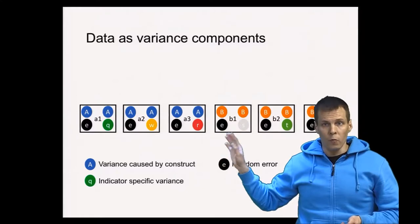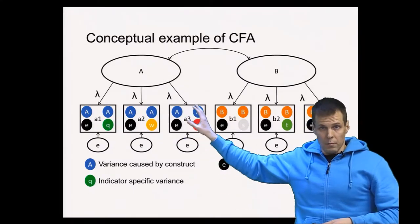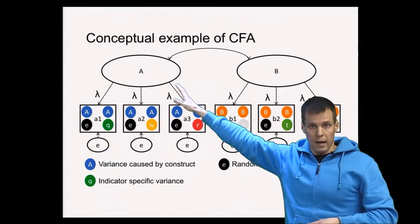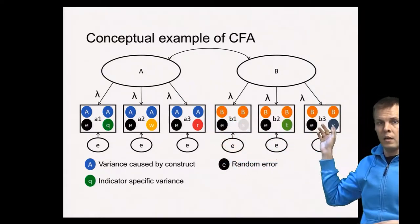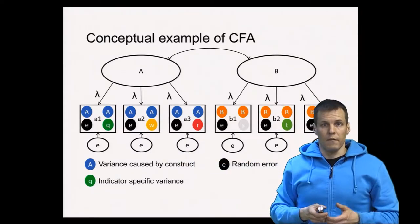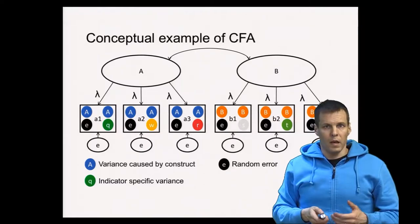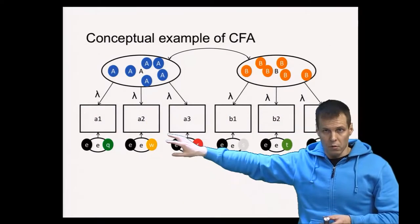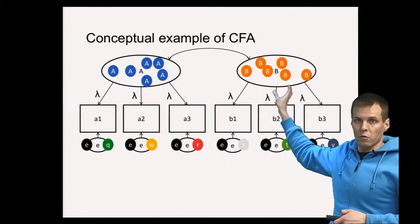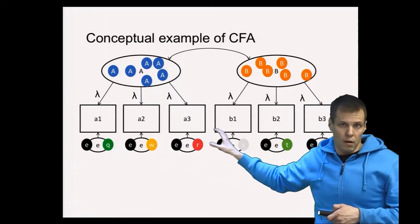The idea of confirmatory factor analysis is that we specify a factor model for this data ourselves. For example, because A1 through A3 are supposed to measure construct A, we assign them to factor A, and then we assign the others to factor B, and each indicator also gets an error term. The factor analysis then takes the variance of those indicators apart into variance attributable to the factors and variance attributable to error terms. All variation due to construct A goes to factor A, all variation due to construct B goes to factor B, and all item uniqueness and unreliability goes to the error terms, which are assumed to be uncorrelated.